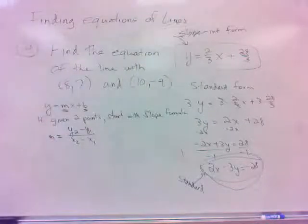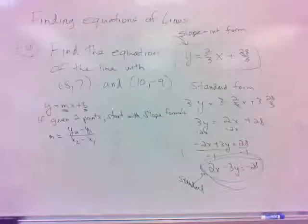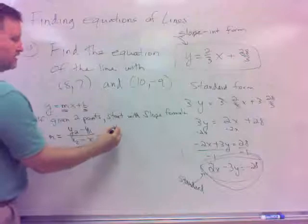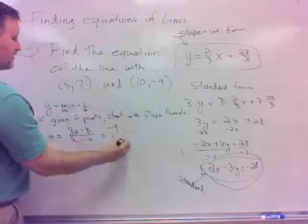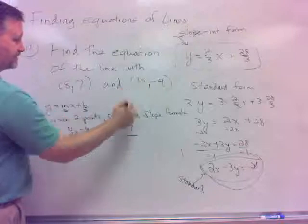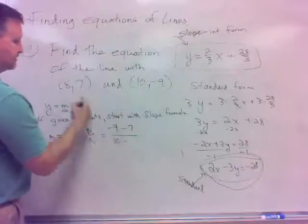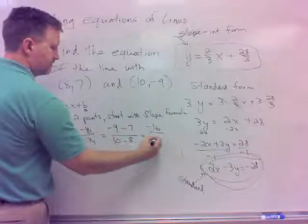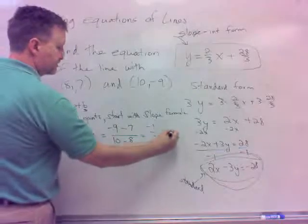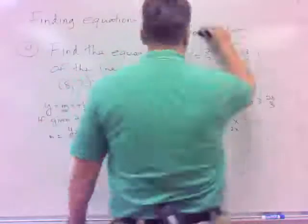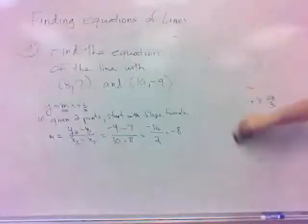Let's start with the slope formula. m equals y2 minus y1 over x2 minus x1. And that will give me my m. If you have two points, then you can figure out the slope from those two points. Just take the second y, negative 9, minus the first y, which is 7. Divide that by second x, which is 10, minus first x, which is 8. What does that give me? Negative 16 over 2, which does reduce. It's negative 8.